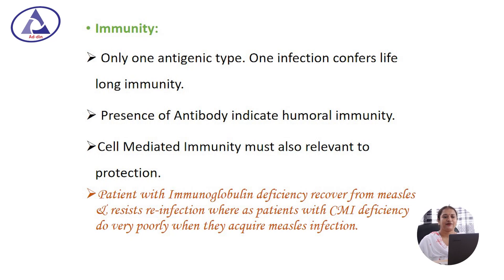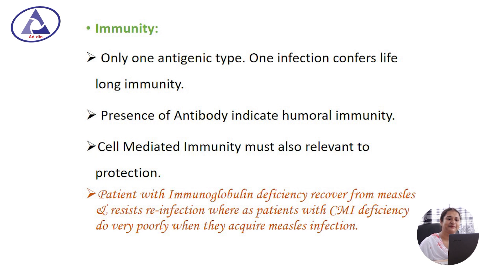Immunity: there is only one antigenic type of measles virus, and it gives lifelong immunity after subclinical or clinical infection in patients with an intact immune system. An effective vaccine is available against measles virus, which is included in our EPI schedule. Presence of antibody indicates humoral immunity; cell-mediated immunity is also relevant to protection. Patients with immunoglobulin deficiency recover from measles and resist reinfection, whereas patients with cell-mediated immune deficiency recover very poorly when they acquire a measles infection.